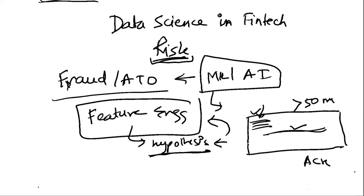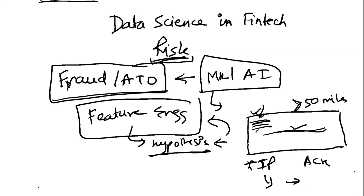For example: when the check sender and receiver are more than 50 miles apart, and the originating IP is in a third location beyond both sender and receiver, there's a high chance the check is fraudulent. I'm making this up, but the point is — working with field experts gives you complex understanding you can't get with AutoML alone. You would code a feature like: if distance between sender and receiver is greater than 50 miles AND the IP is more than 50 miles from either, then feature equals 1, else 0.